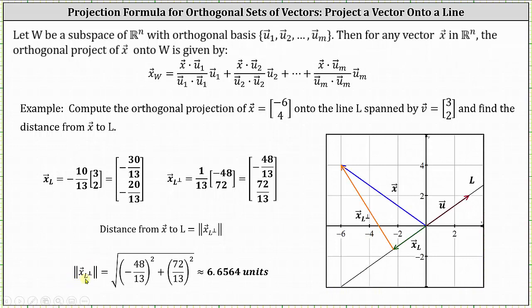The magnitude of the projection of vector x onto the orthogonal complement of l equals the square root of the sum of (-48/13)^2 and (72/13)^2, which gives approximately 6.6564 units — the distance from vector x to line l. To summarize: the orthogonal projection of vector x onto line l is vector x sub l = (-30/13, -20/13), and the distance from vector x to line l is approximately 6.6564 units.